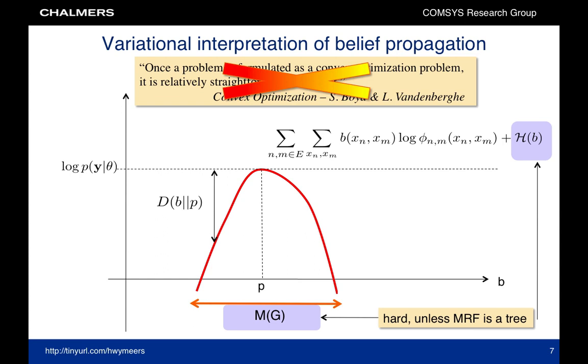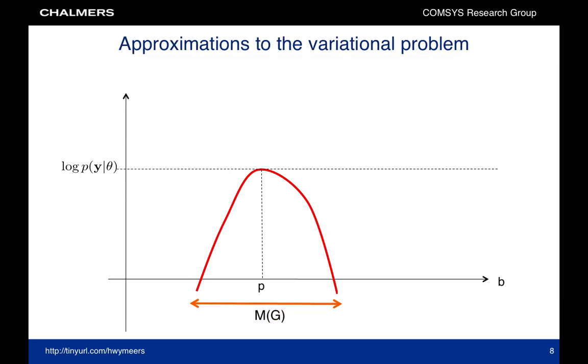First of all, when the factor graph or the Markov random field is not a tree, the marginal polytope is very hard to describe. Secondly, the entropy for a generic distribution is hard to evaluate.